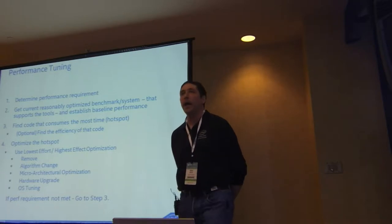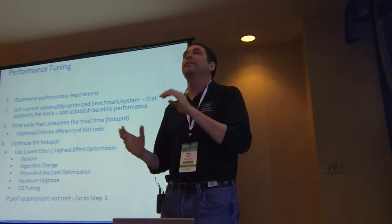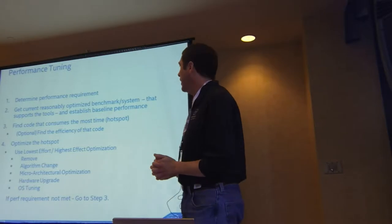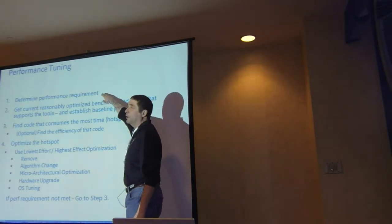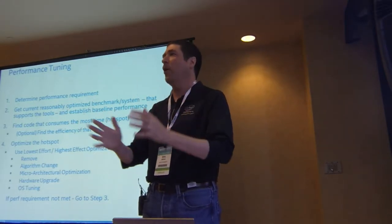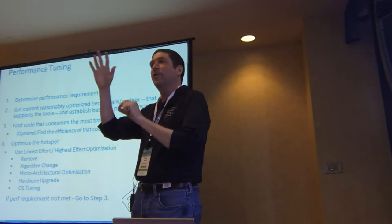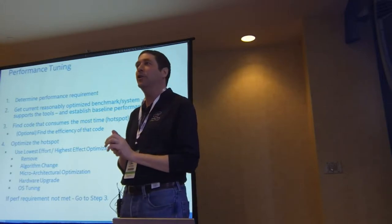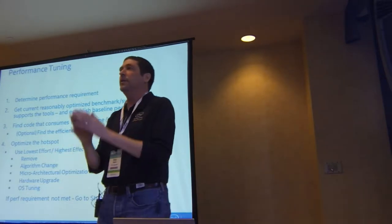I've read a lot of books on performance tuning on various systems — they all have slightly different approaches to the same thing. First, you need to determine what performance you want. Some people think you just performance tune until you're done and you've got all the speed. I have a team in Russia who have been working on matrix multiply — it's three lines of code — and the same team has been working on those same three lines for 20 years. So I actually believe it's better to have a performance requirement and determine what that is.